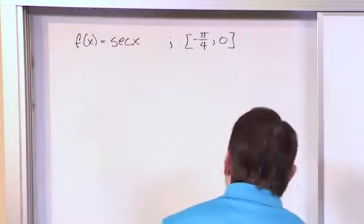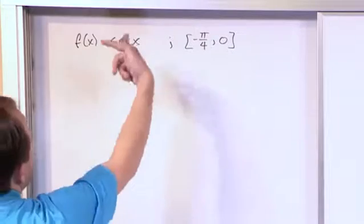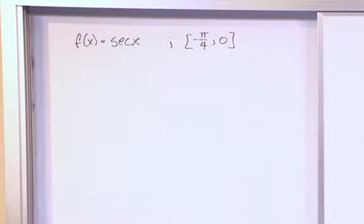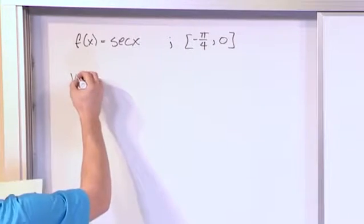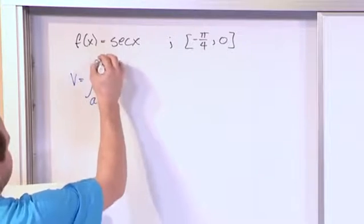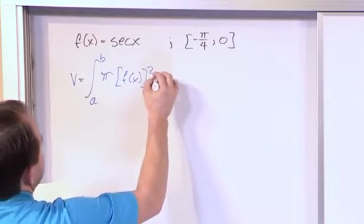Alright, so what we have here is this is a function, the secant function, we're revolving it around the x-axis. Here's the extent or the length of that object and what we want to do is find the volume. So we want to say the volume is equal to, from a to b, of pi times f of x squared dx.